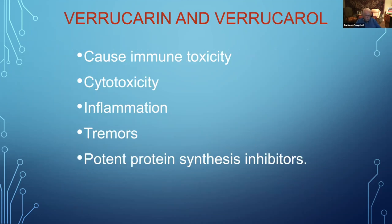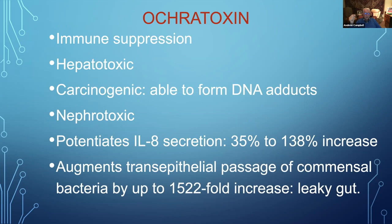Verrucarin and Verucarol cause immune toxicity and cytotoxicity — meaning they're toxic to cells — and cause inflammation and tremors. They are very potent protein synthesis inhibitors, meaning your body can't absorb protein from your food. If you eat a dozen scrambled eggs or a huge steak, you won't be able to process that protein.